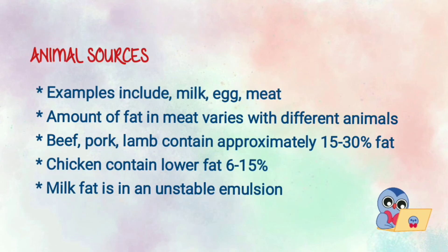Animal sources of fat — examples include milk, egg, meat, etc. The amount of fat in meat varies with different animals. Beef, pork, and lamb contain approximately 15–30% fat. Chicken usually contains a lower percentage of fat, that is 6–15%. Milk fat is an unstable emulsion.